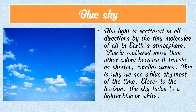Most of the time, closer to the horizon, the sky fades to a lighter blue or white. Blue is scattered more than other colors because it travels as shorter, smaller waves, and this is why we see a blue sky most of the time. Closer to the horizon, the sky fades to a lighter blue or white.